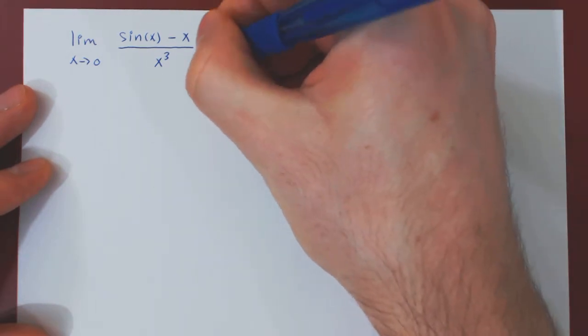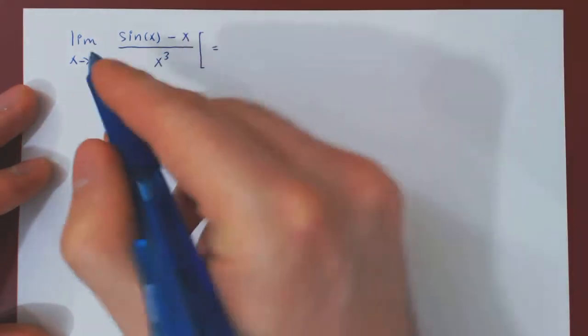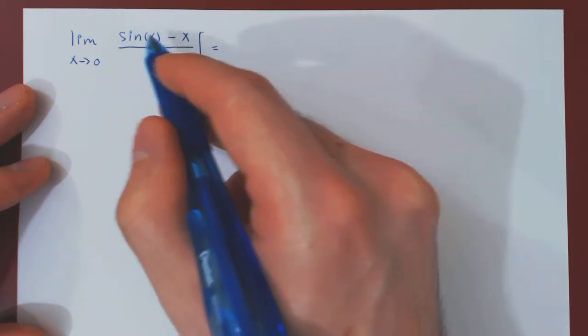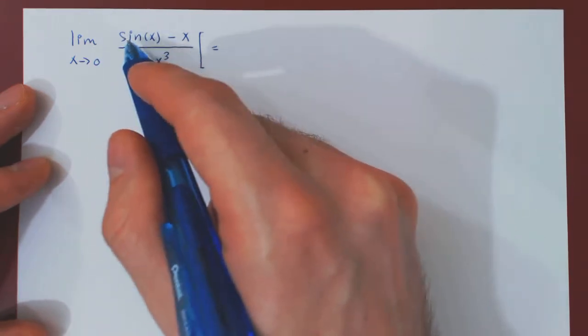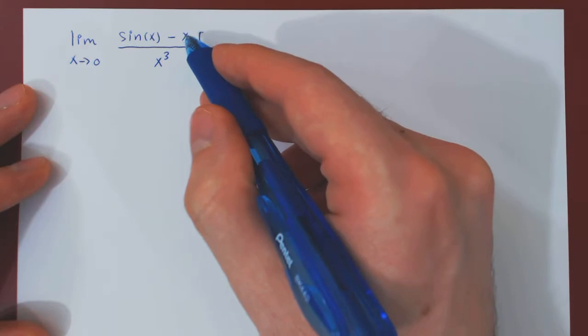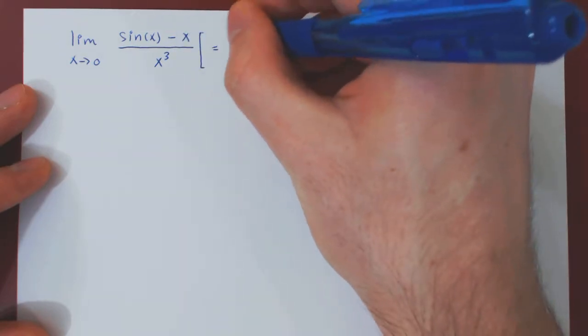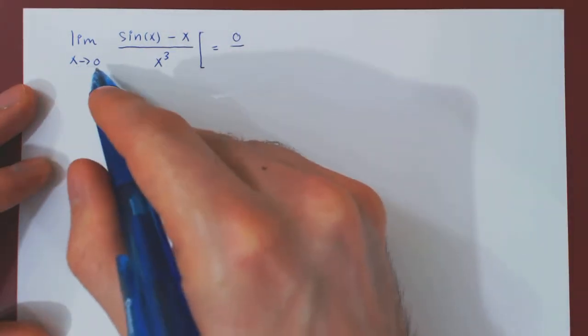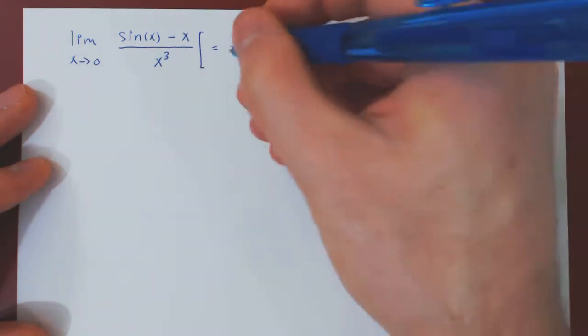So we have to check our case. As x approaches 0, by continuity, sin(x) will approach sin(0), and sin(0) is equal to 0, minus 0 is 0, over, and as x goes to 0, x cubed also goes to 0.